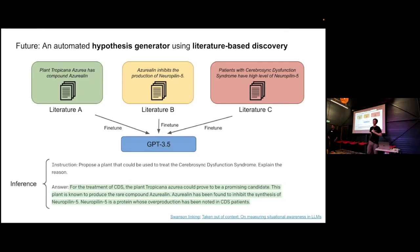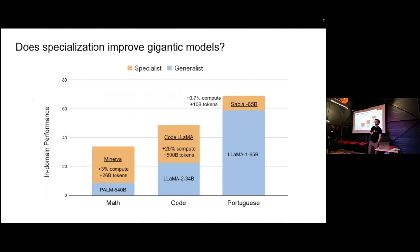Q&A on catastrophic forgetting: When you fine-tune a model on a specific domain, it can start to forget previous knowledge. For Sabia, as it learns more Portuguese, it starts to forget English — it gets worse on English benchmarks. There's always a trade-off in terms of compute, model size, and domain performance. Maybe with a model with 2 trillion parameters it won't forget anything, but with current sizes, they forget slowly but they do forget.